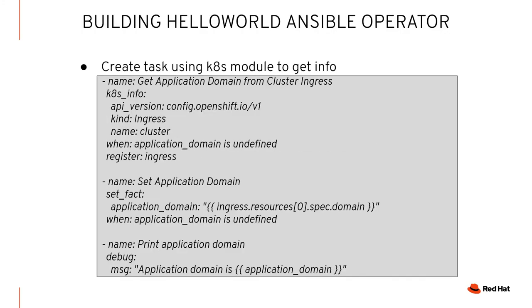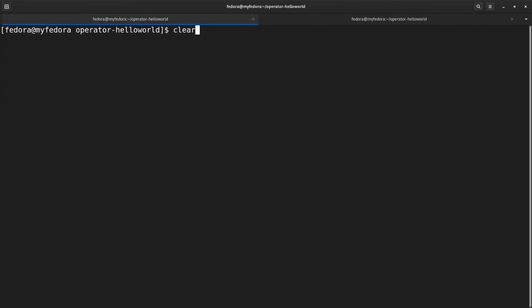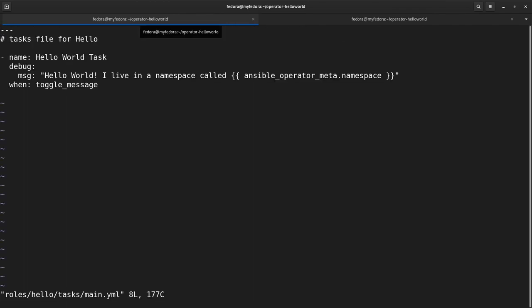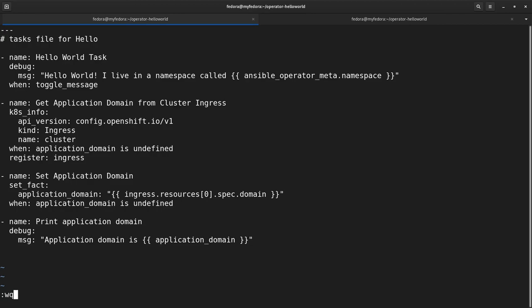Now let's get into how to work with Kubernetes from an Ansible perspective. There are a couple of modules. The first is k8s_info, which you use to query Kubernetes objects and get information. In this case, we're interested in getting the application domain — the FQDN that application ingress routes use — which is stored in the ingress object. We're going to get that, set it as a fact, and then print that fact. I'm going to vi the tasks file again and paste in those additional tasks.